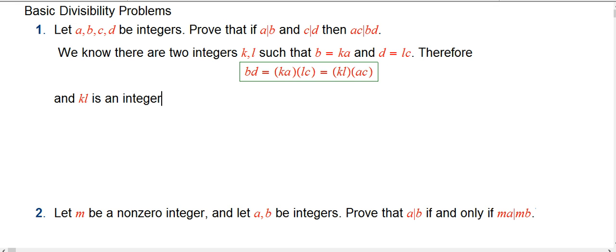And KL is an integer. We know that when we multiply two integers, we get another integer. And we've written down the definition of BD being divisible by AC, because we've exhibited BD as some integer times AC. So that means that AC divides BD.